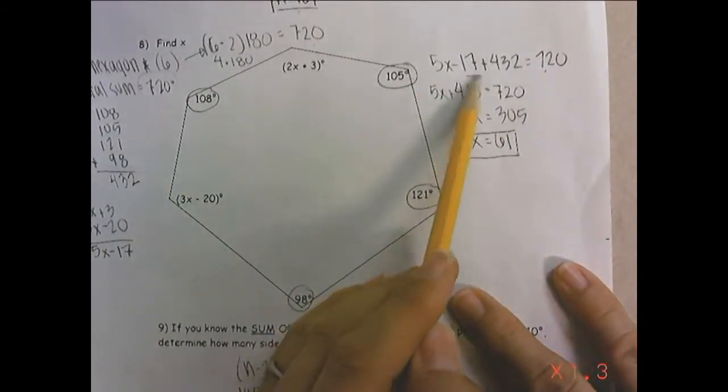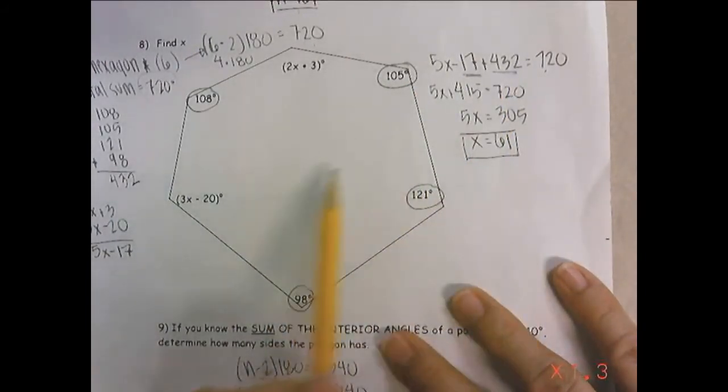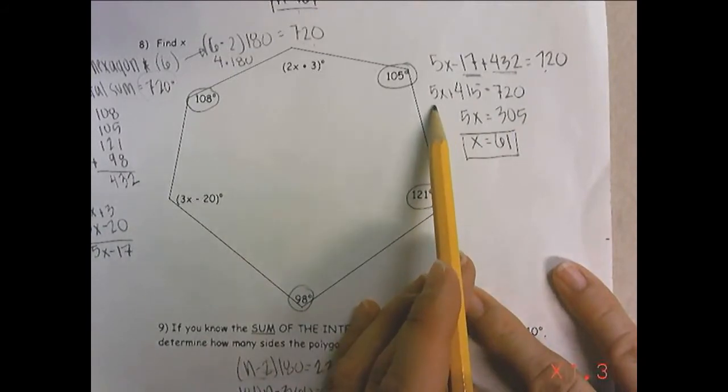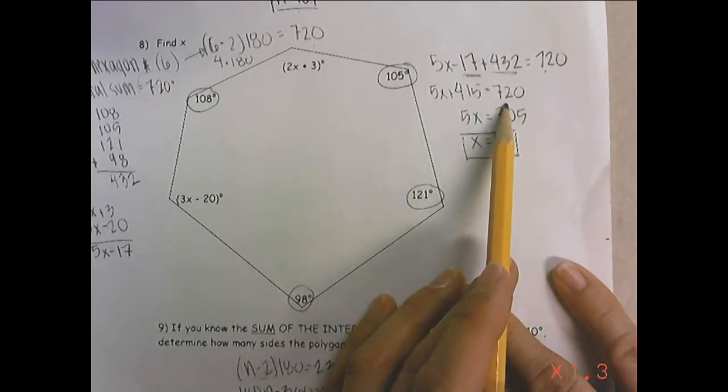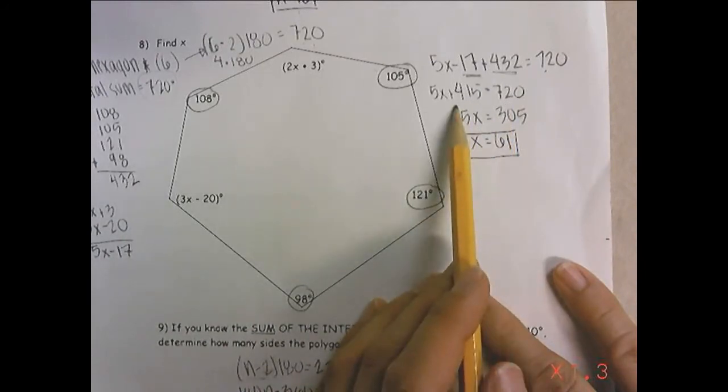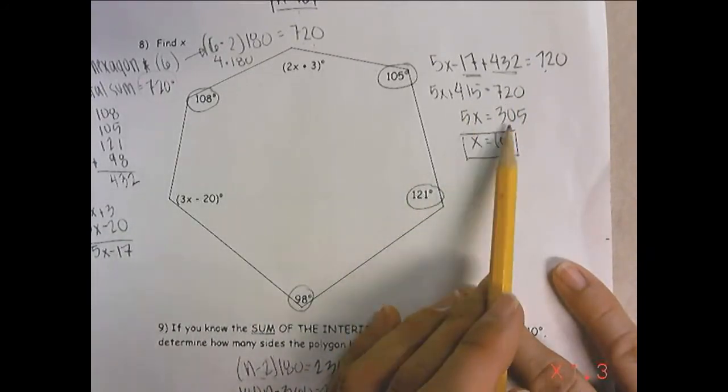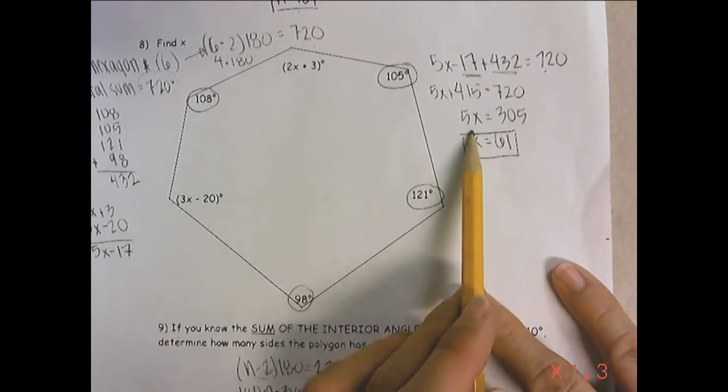I combined these like terms, and then I got 5x plus 415 equals 720. And I subtracted 415, and got 5x equals 305, divided by 5, divided by 5, x equals 61.